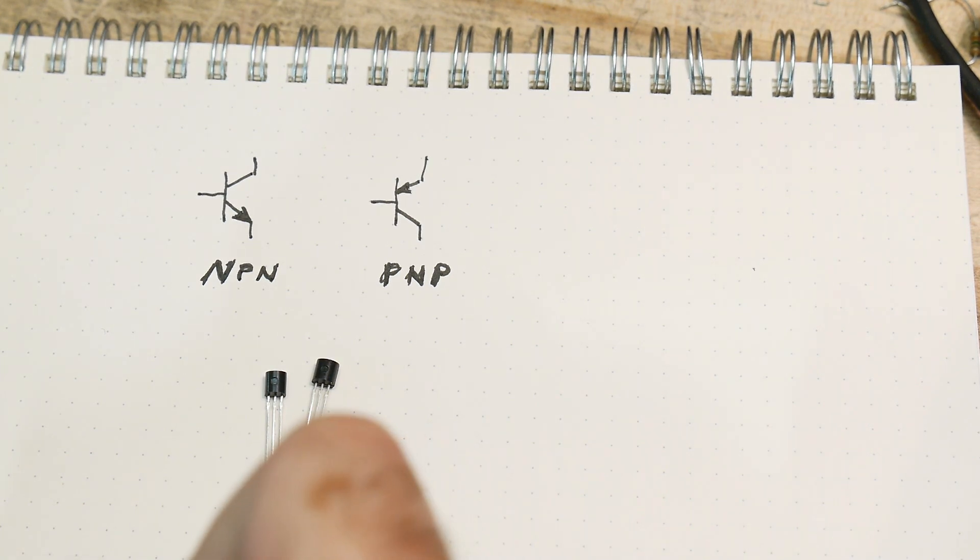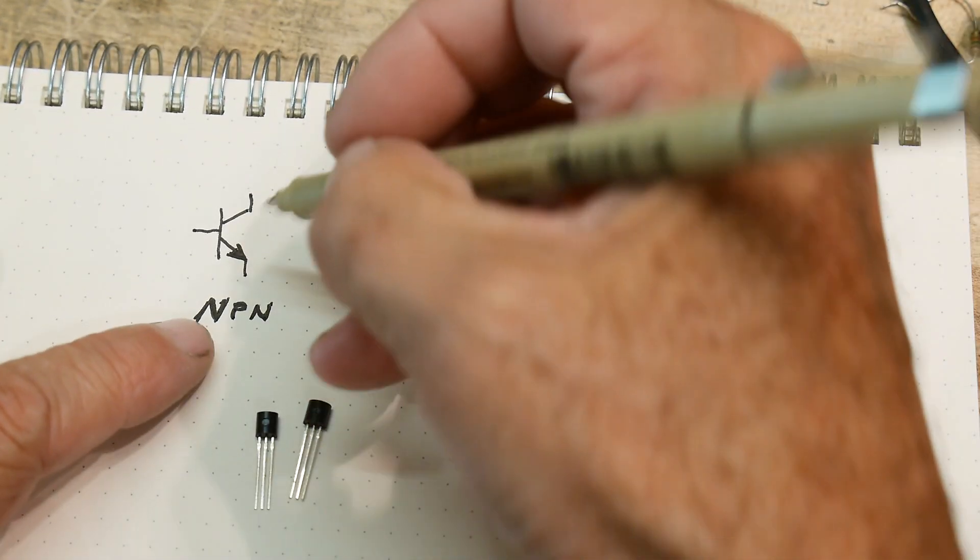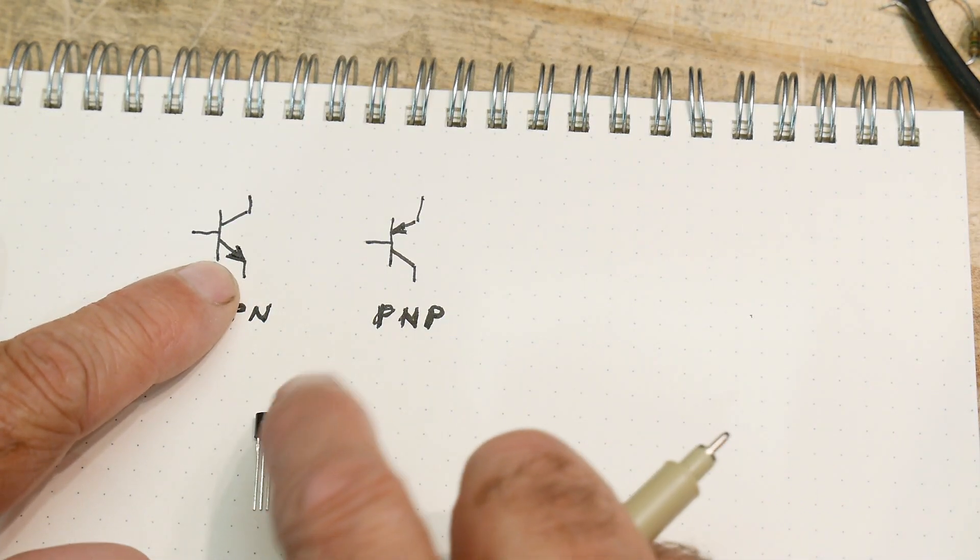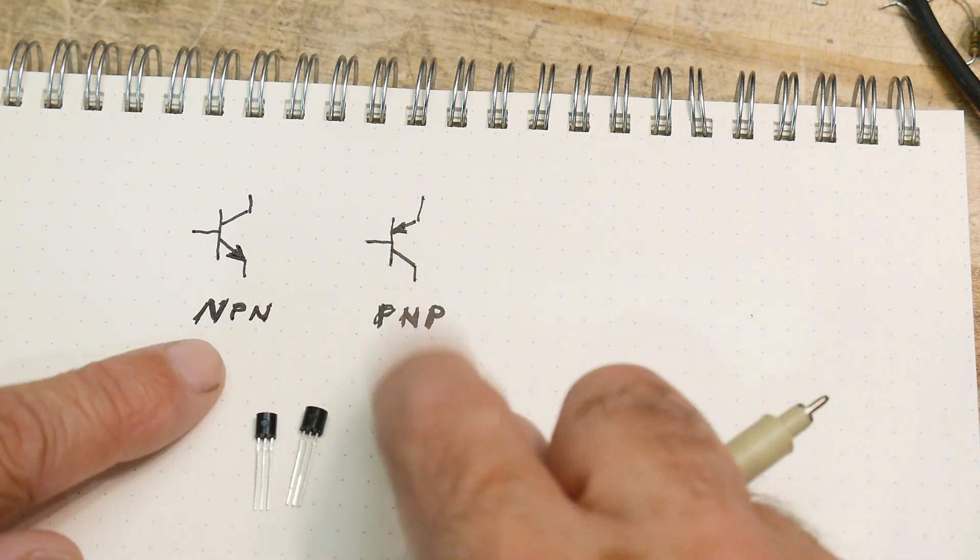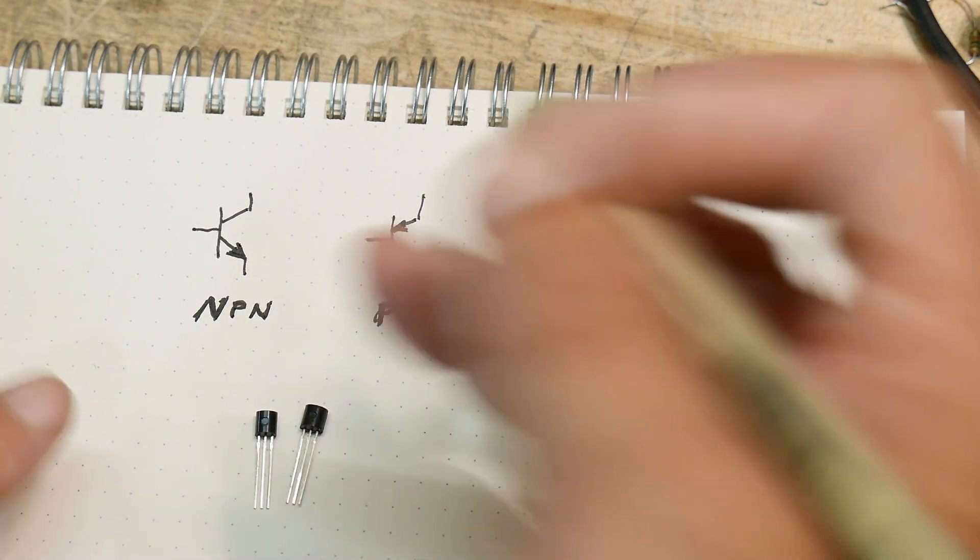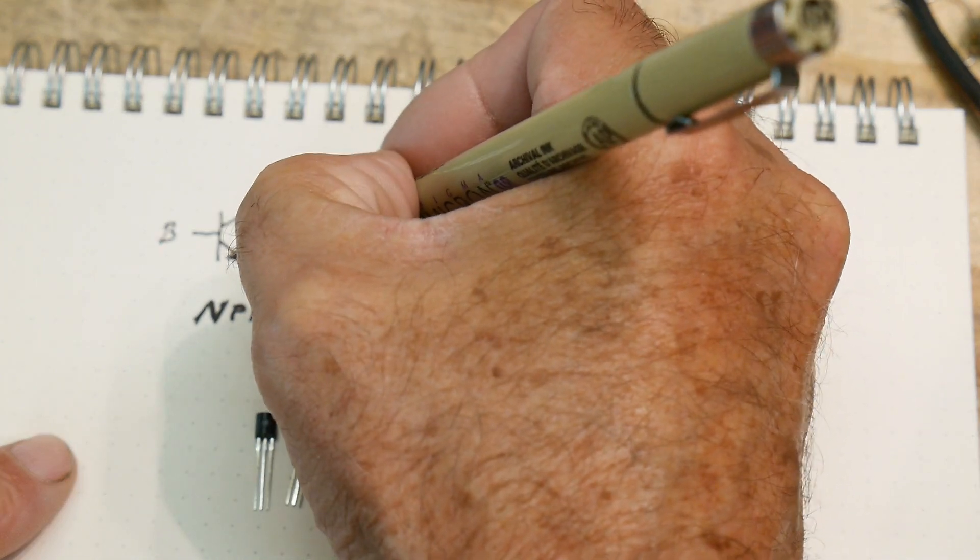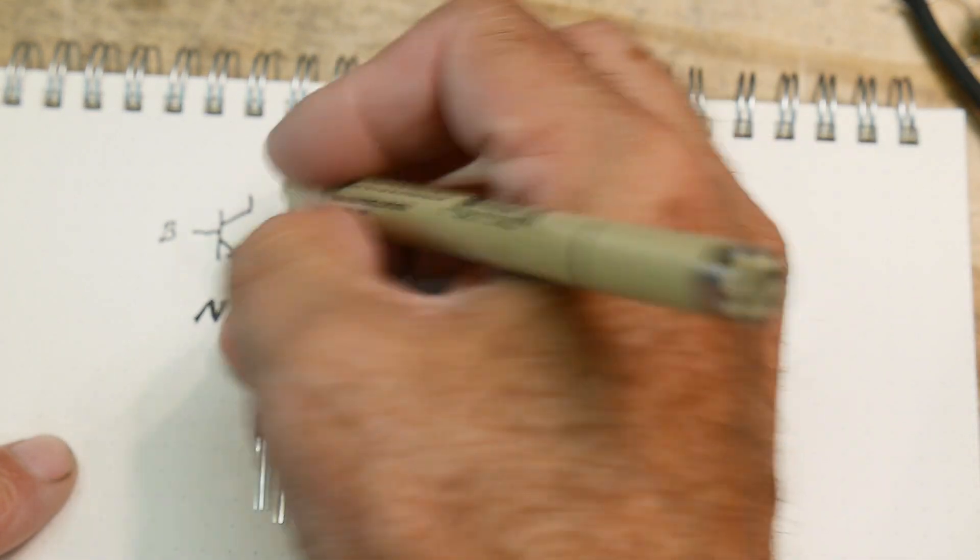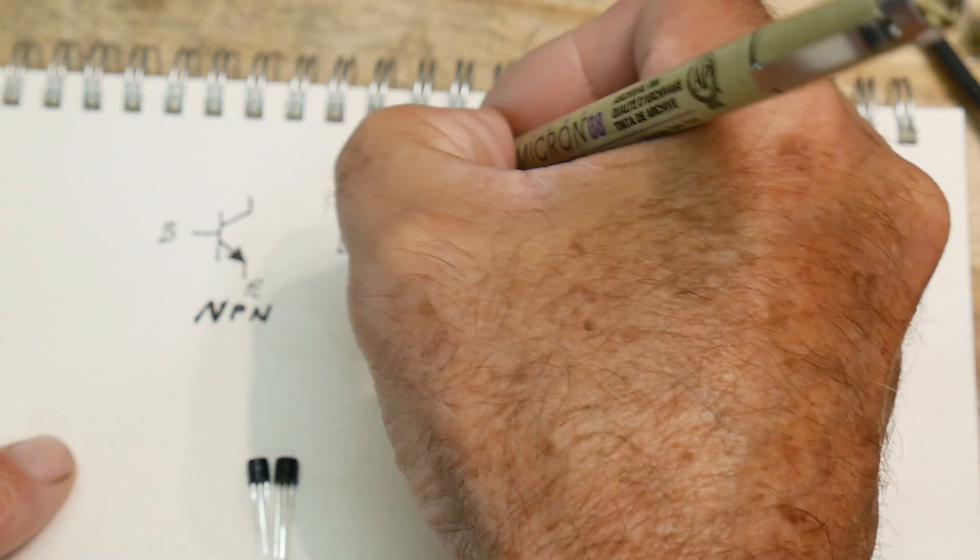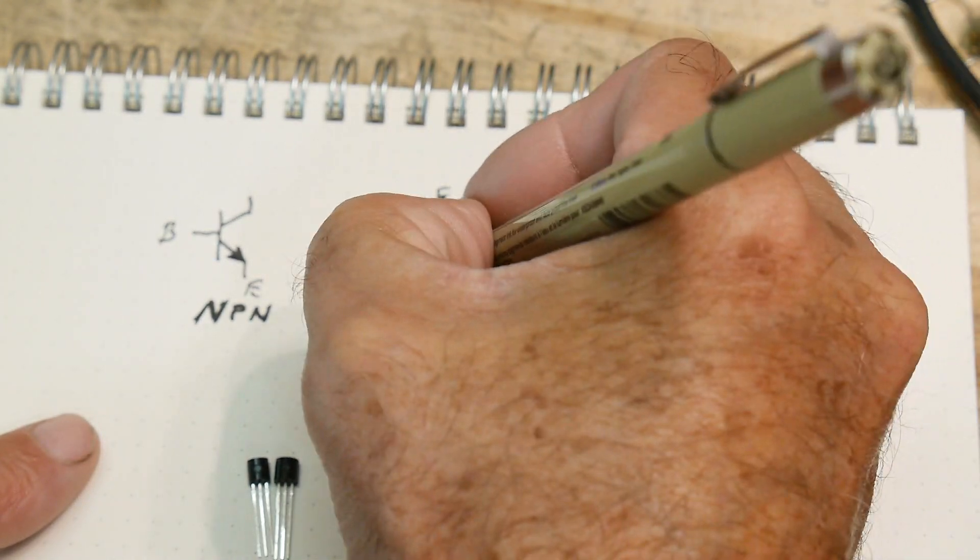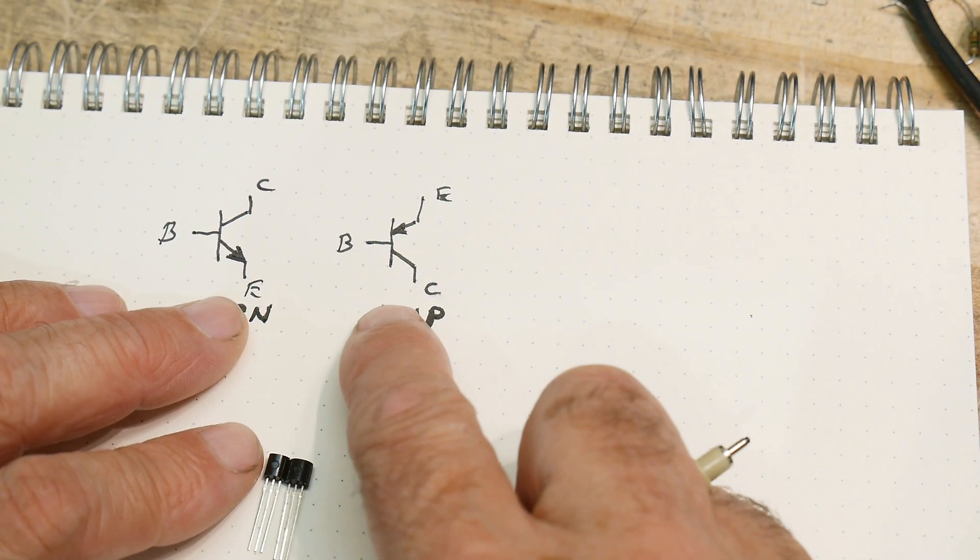So you draw them with little arrows, and if the little arrow is going out, then it's an NPN. If the little arrow is going in, then it's a PNP.